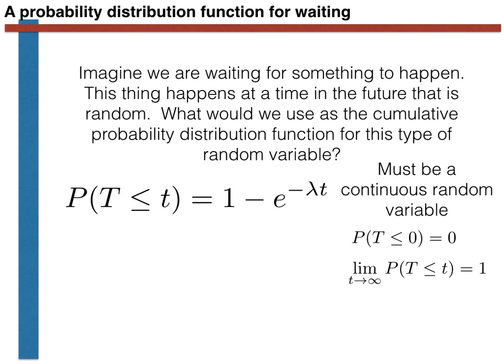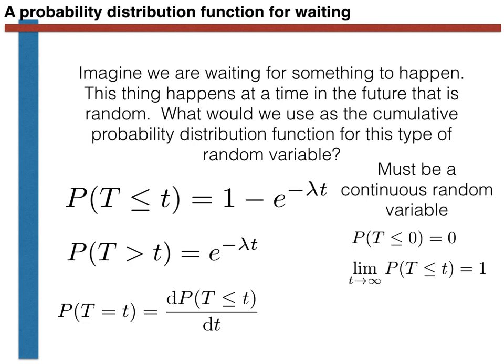The expression we have written down for P(T ≤ t) is the cumulative probability distribution function for an exponential random variable. From this we can easily derive other important results. The probability that T is greater than small t is one minus the CDF, which gives e^(−λt). Similarly, the probability density function is the first derivative of the CDF with respect to small t, which gives λe^(−λt).